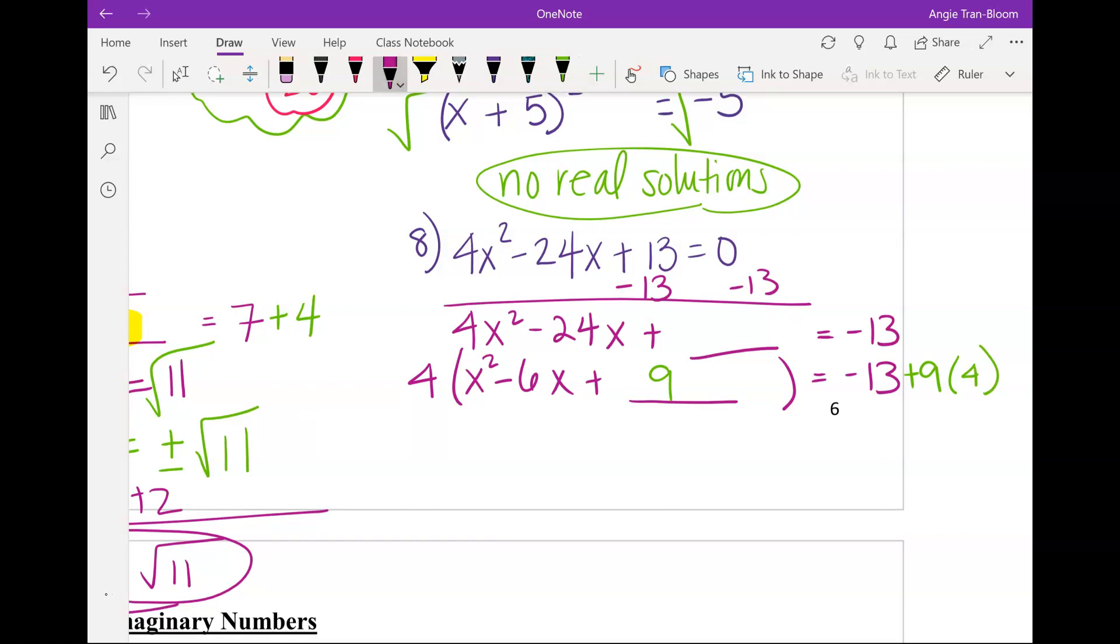Now, we can factor it normally. 4 times perfect trinomial. So, how do we factor that? X minus 3. Yep. Equals negative 13. 9 times 4 is what, Kyler? 36. Okay. So, Kyler, negative 13 plus 36. Negative 13 plus 36, sir. 23. Good.